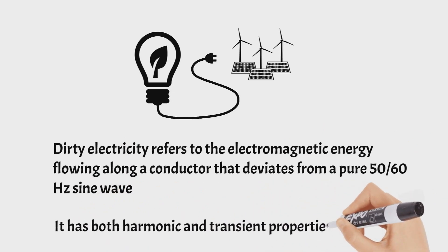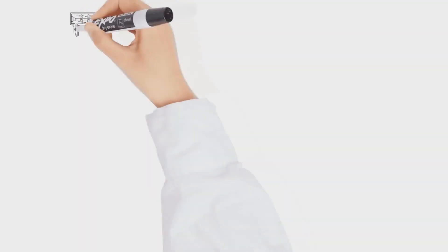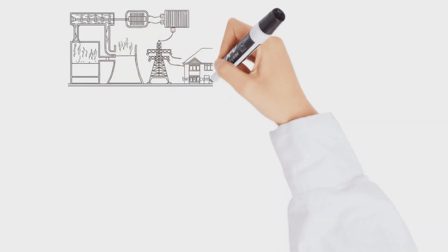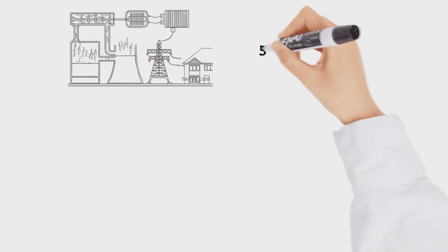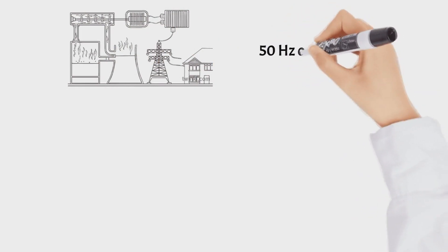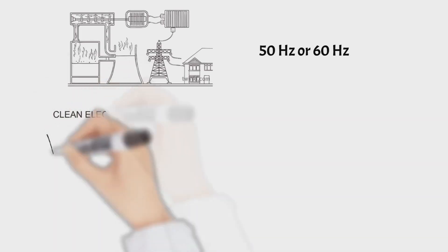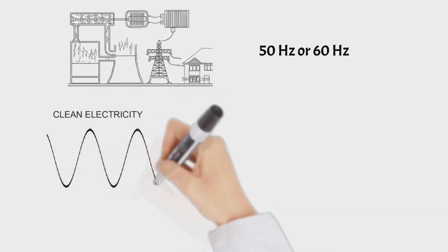First, we have to understand two important concepts. We know that electrical generating stations produce electrical power at a frequency of 50 or 60 hertz. For dirty electricity, we don't have a pure sine wave like clean electricity with 50 or 60 hertz, but we have this dirty waveform.